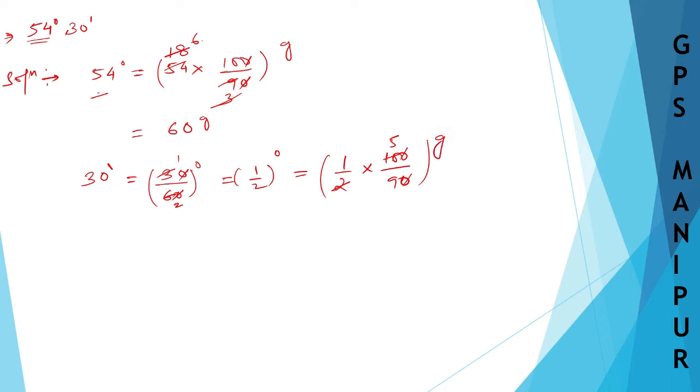Now this 5 by 9, like previous question, 5 divided by 9 is a decimal number, less than 1 actually. So we can convert it into 5 by 9 into 100. If we multiply by 100, we can write down, instead of grade, this is centisimal minutes. Now 500 divided by 9.